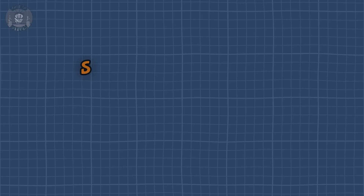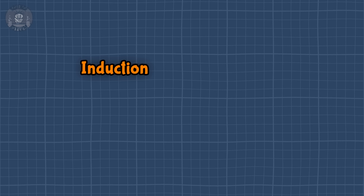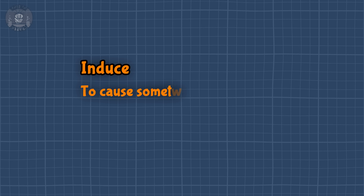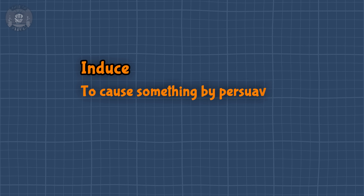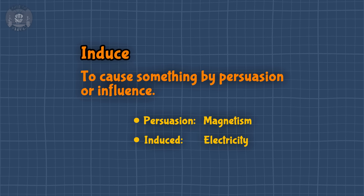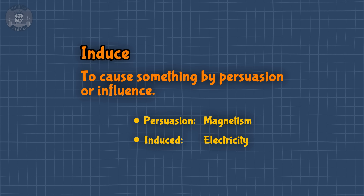It seems natural to start with the name magnetic induction. The word induction comes from the root word induce, which just means to cause something by persuasion or influence. In this case, magnetism induces electricity. This method of generating electricity isn't anything new — it's almost two centuries old.